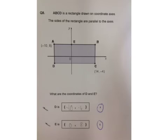And finally, ABCD is a rectangle drawn on coordinate axes. The sides of the rectangle are parallel to the axes. What are the coordinates of D and E? So looking at D, what do we already know? Well, its position on the x-axis is minus 10.